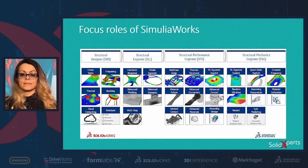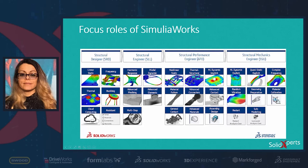There are three types of non-linearities in finite element analysis: non-linear material, non-linear contact, and non-linear geometry or large strain formulation. If any of these are present, we need non-linear static analysis. Other modules in this role include thermal-structural coupling and non-linear dynamic analysis. There are two solver types: implicit and explicit. Implicit dynamic analysis is included in the Structural Performance Engineer role, but for explicit non-linear dynamic analysis, we need the Structural Mechanics Engineer role.